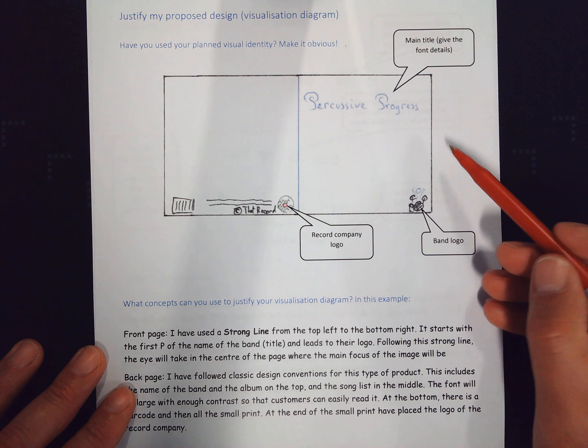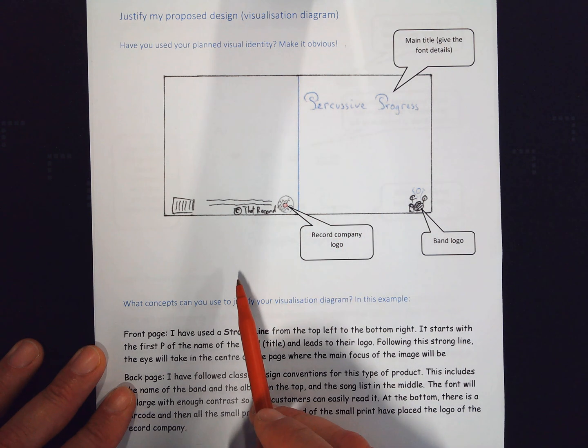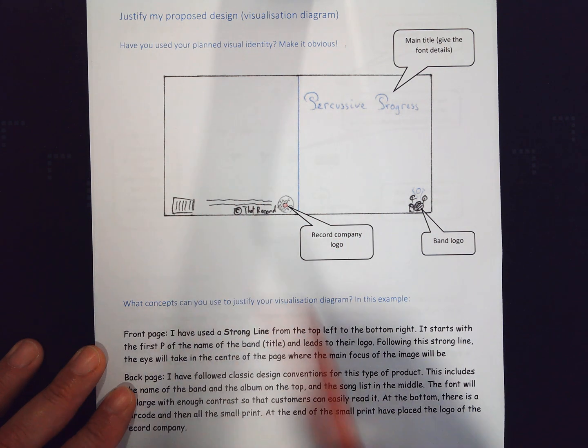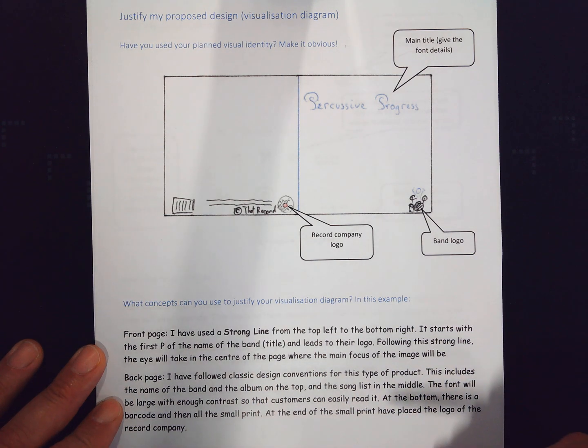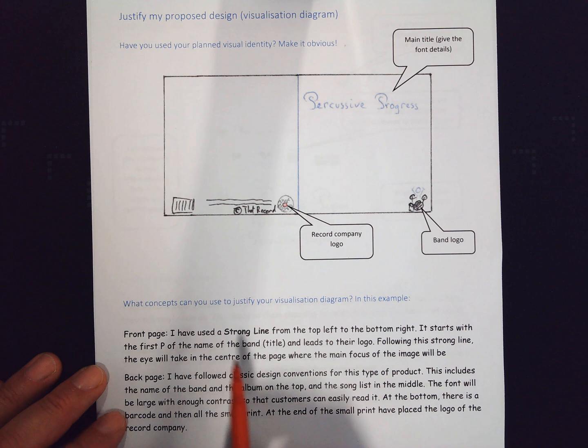I want them to realize that those two design documents are linked. In this visualization diagram, I'm only showing you the visual identity and then some small elements over here. How am I going to justify this now that I've established I'm using the visual identity? Well, I can use some key concepts. For example...